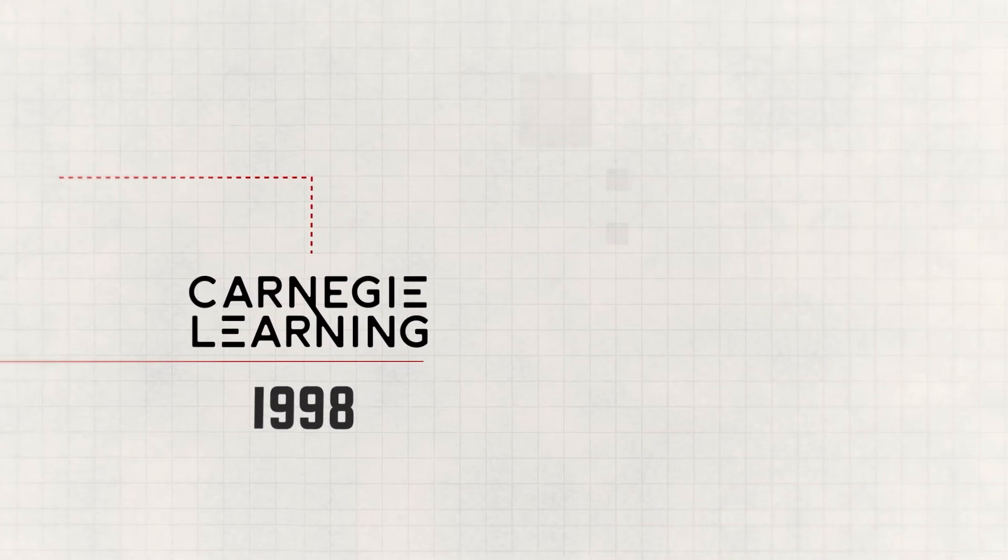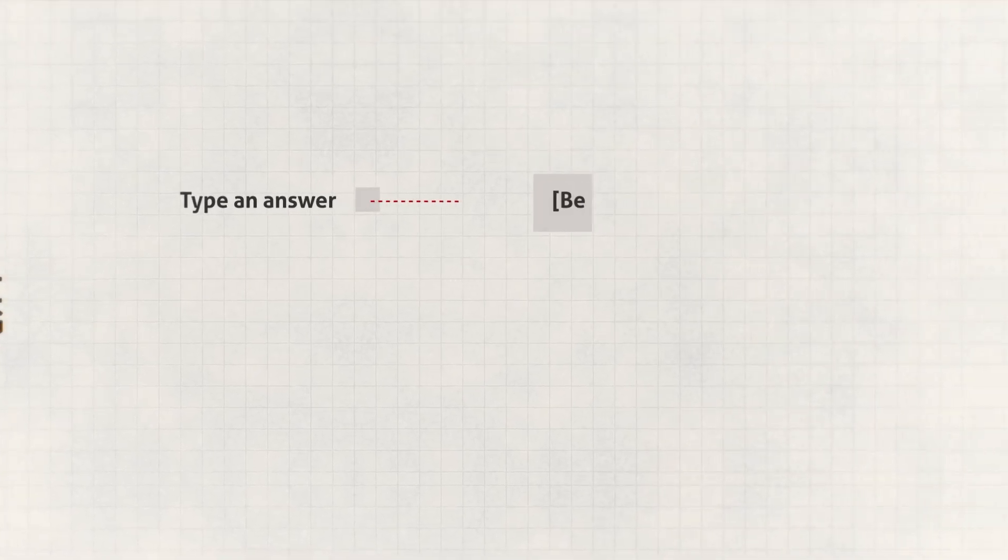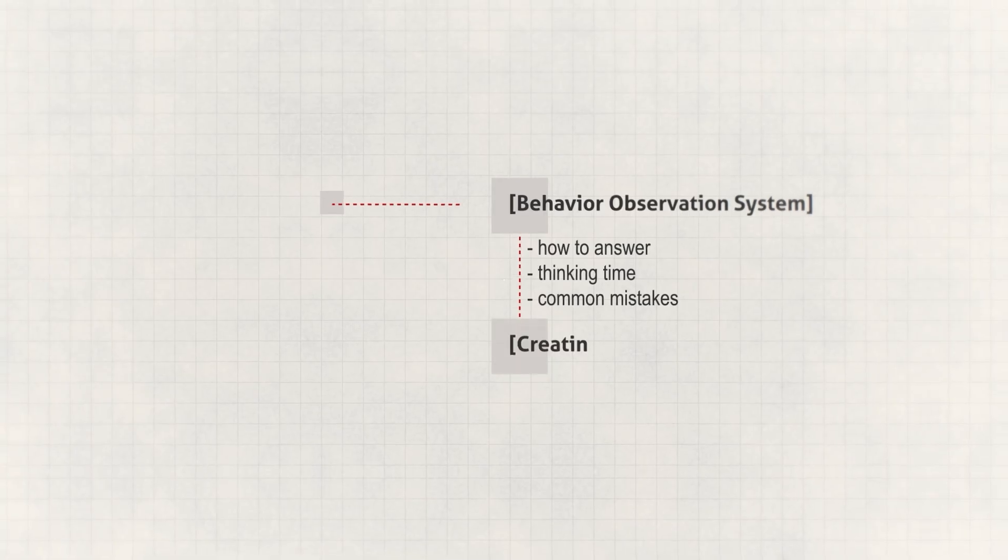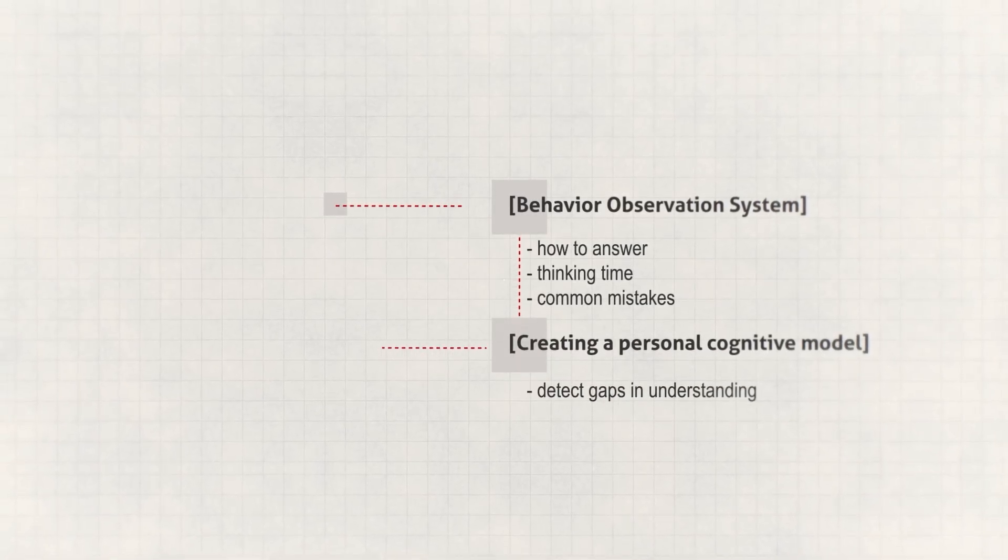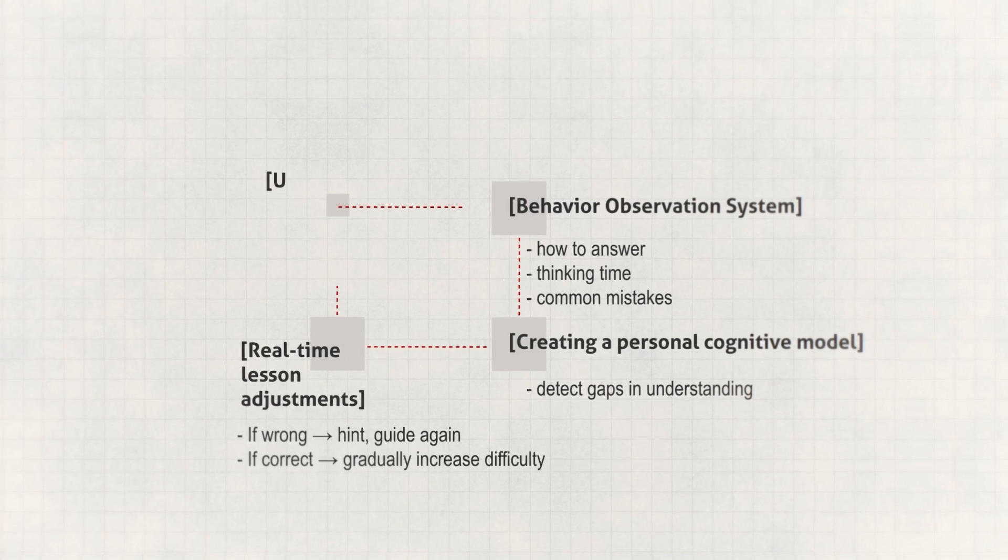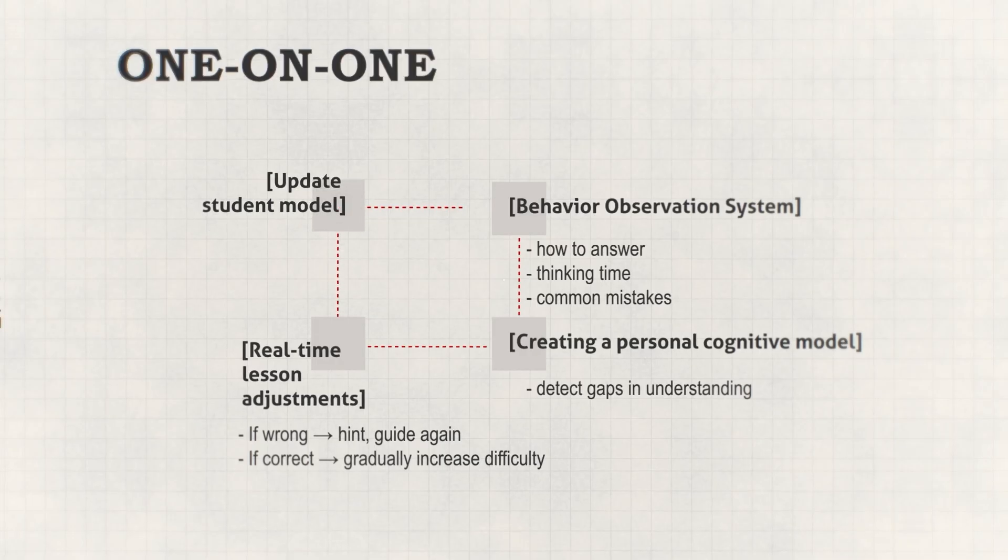This isn't your grandma's rule-based AI, a program that simply checks if your answers are right or wrong. Instead, Carnegie Learning creates individual cognitive models for each student. It analyzes thinking patterns, identifies exactly where understanding breaks down, and adapts in real time. So by 1998, they began testing it in real schools. And the results? Students using Carnegie Learning show nearly double the growth on standardized tests. And so for the first time, an AI tutor matches the effectiveness of one-on-one human tutoring. But true AI experts knew that the success was anecdotal. Just a few schools here and there proving the concept. And no one's collecting data at scale to truly grow the AI.